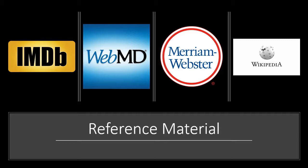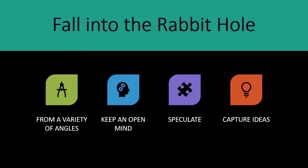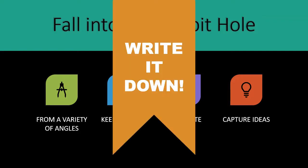Right now we want you to explore library resources, and I just want you to see that these are all reference material. What I want you to do is fall into the rabbit hole — follow your curiosity and see where it takes you. Explore different angles of a topic, because one source might say one thing and another source will say something else. Keep an open mind, but also be sure to speculate. Ask yourself questions, and when you do, make sure you capture those ideas. Write them down.